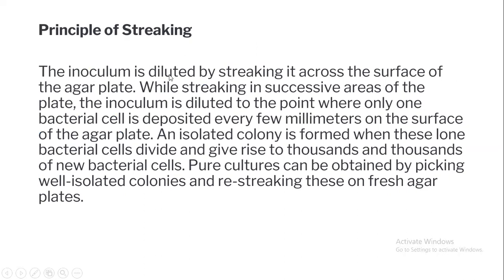Principle of streaking: the inoculum is diluted by streaking it across the surface of the agar plate. While streaking in successive areas of the plate, the inoculum is diluted so that we reach a point where only single bacterial cells are deposited every few millimeters on the surface of the agar plate. An isolated colony is formed when these individual bacterial cells divide repetitively, giving rise to thousands of new bacterial cells in the form of a visible colony. These isolated colonies can then be re-streaked to obtain pure cultures of a particular organism.